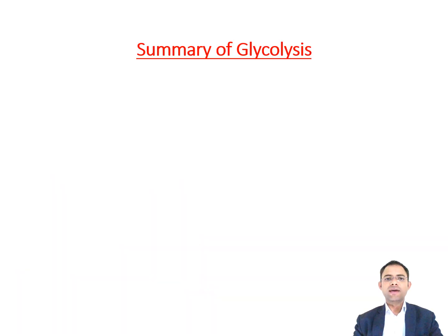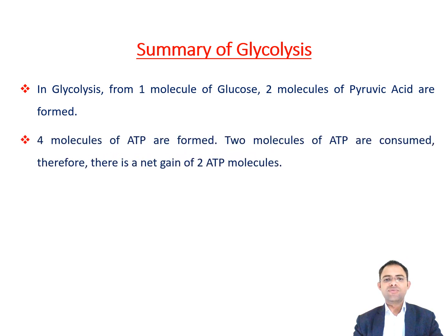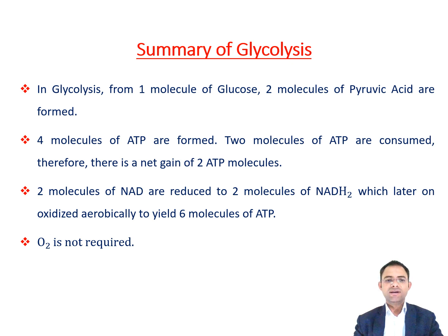Now the summary of glycolysis. In glycolysis, from 1 molecule of glucose, 2 molecules of pyruvic acid are formed. 4 molecules of ATP are formed and 2 molecules of ATP are consumed in glycolysis. Therefore, there is a net gain of 2 ATP molecules. 2 molecules of NAD are reduced to 2 molecules of NADH₂, which later are oxidized aerobically to yield 6 molecules of ATP. Thus, the energy of glucose becomes stored partly in ATP molecules and partly in NADH₂ molecules. Oxygen is not required in the process of glycolysis and carbon dioxide is also not produced.